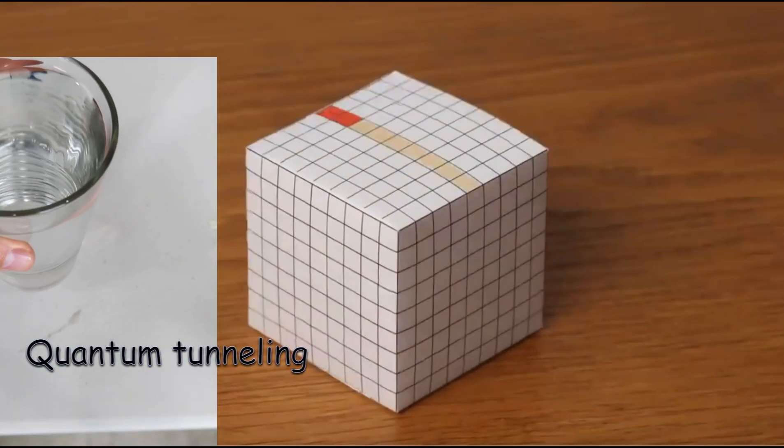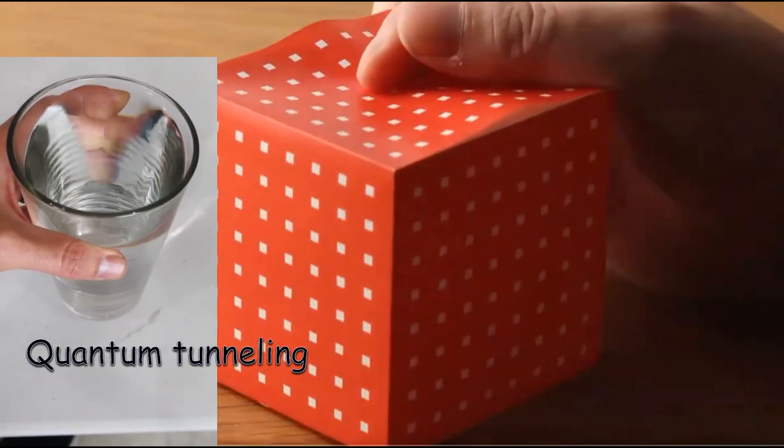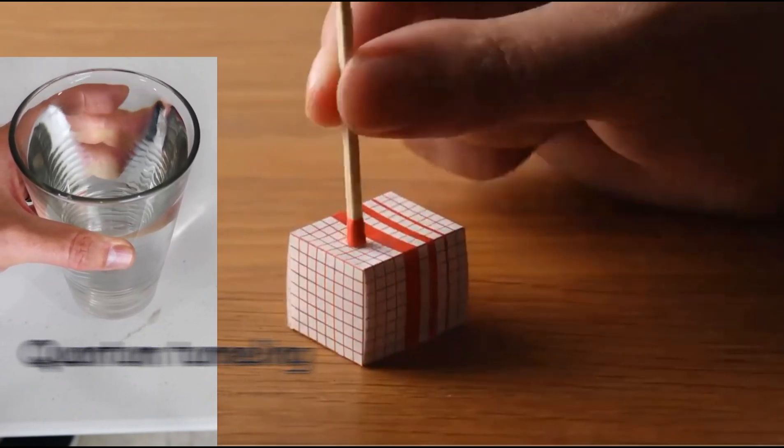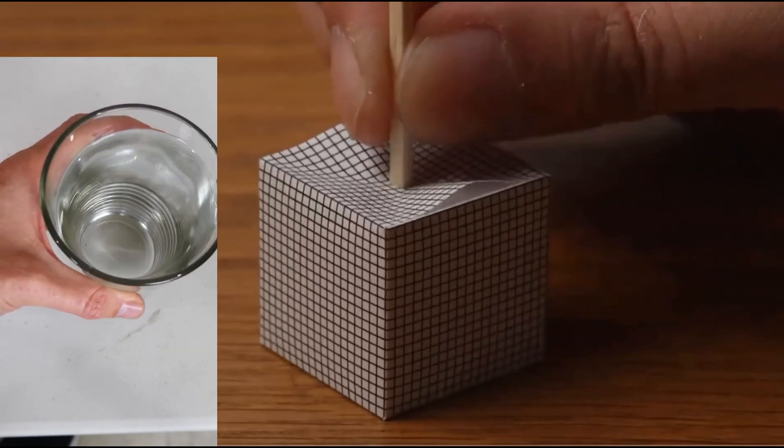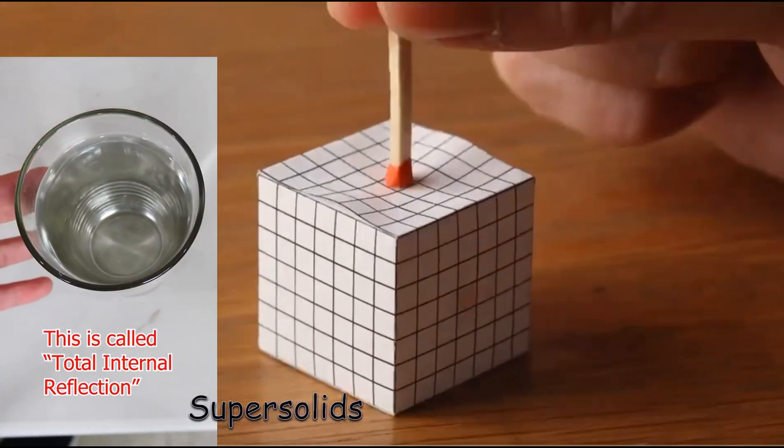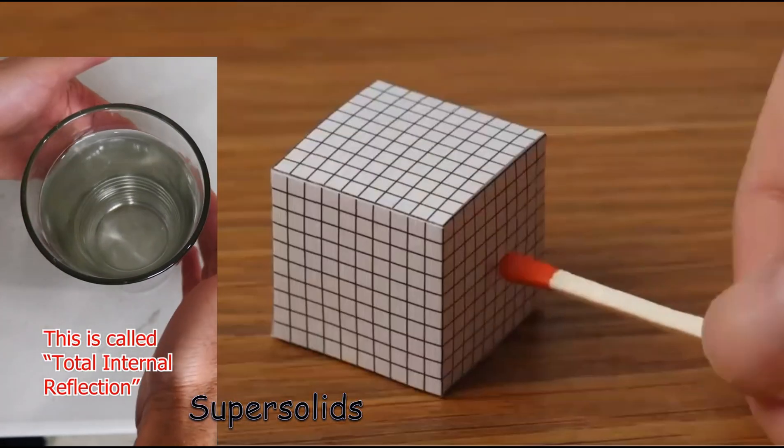You can actually see a great analog of this using a glass of water. Notice that as I hold the glass sideways, you can see my fingers easily on the other side of the glass. But when I turn the glass upright, suddenly the sides of the glass become like a mirror. You can't see anything outside of it.